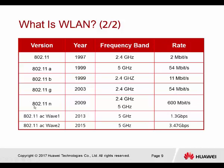802.11n was created in 2009 and can operate in two different frequency bands: 2.4 or 5 GHz. With 802.11n's latest modulation technology, it can achieve speeds up to 600 Mbps. Finally, we have AC Wave 1 and Wave 2. AC Wave 1 can easily give speeds up to 1.3 Gbps, and Wave 2 can reach 3.47 Gbps.